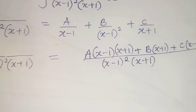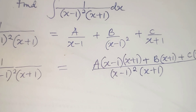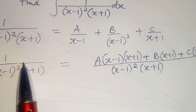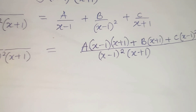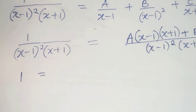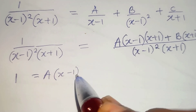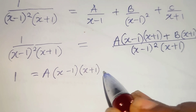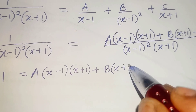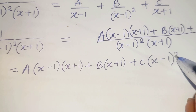Since the fractions on the left and right are equal for all values of x, and the denominators are equal, we can equate the numerators. So we have: 1 equals A(x minus 1)(x plus 1) plus B(x plus 1) plus C(x minus 1) squared.